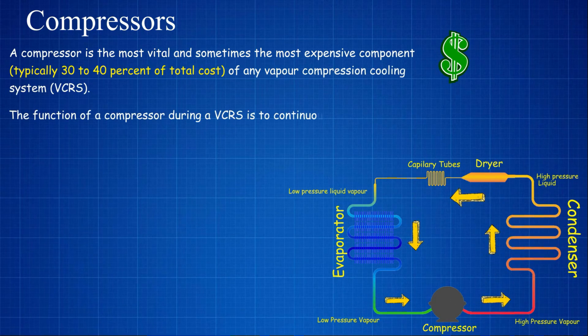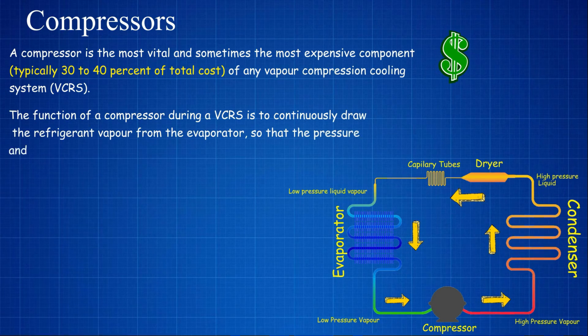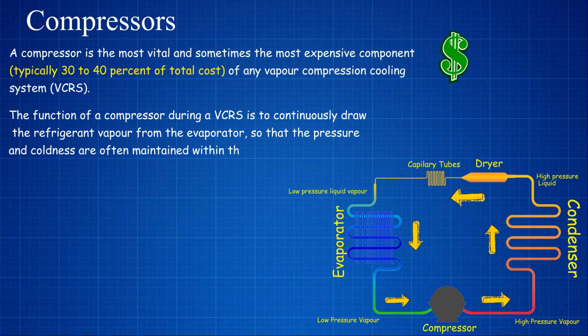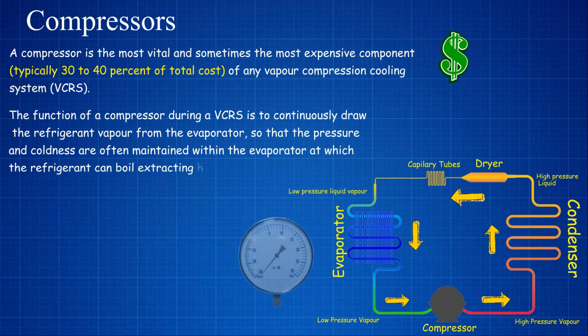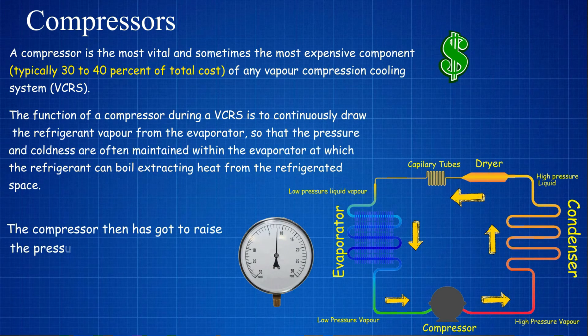The function of a compressor in a VCRS is to continuously draw the refrigerant vapor from the evaporator so that the pressure and coldness can be maintained in the evaporator at which the refrigerant can boil, extracting heat from the refrigerated space. The compressor then has to raise the pressure of the refrigerant to a level at which it can condense by rejecting heat to the cooling medium in the condenser.